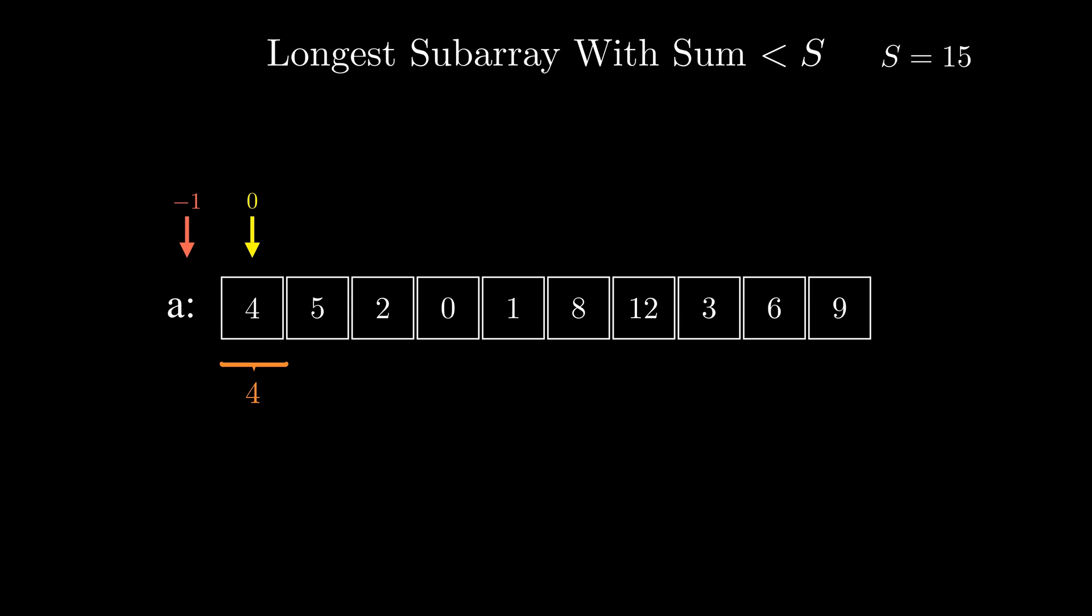Initially we can start processing the window containing only the first element. At each step we can move the right pointer one element to the right and then adjust the left pointer to make sure that the sum of the current window doesn't exceed 15. This makes it easy to implement the algorithm as we move the right pointer one step at a time while only adjusting the left one.